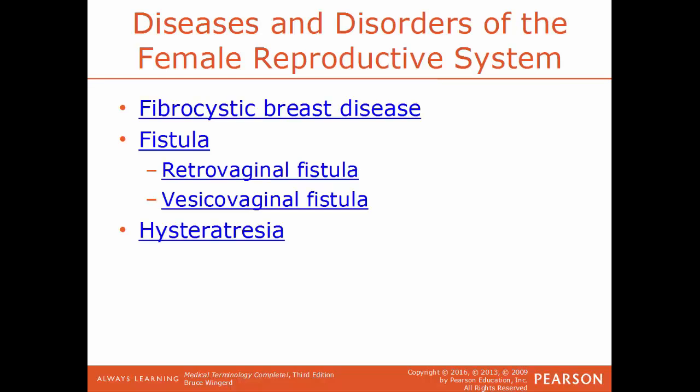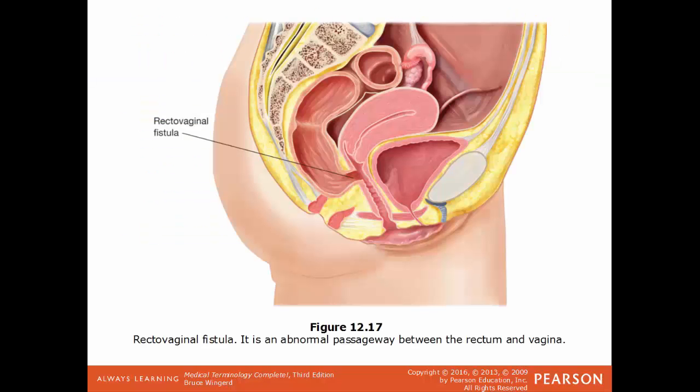A fistula is a permanent abnormal passageway between two organs or between an organ and the exterior of the body. A rectovaginal fistula is a connection between the rectum and the vagina. A vesicovaginal fistula is a connection between the vagina and the bladder. Hysteratresia is a condition where there is a closure of the uterus. In an illustration of a rectovaginal fistula, the rectum and vagina should not be connected — the abnormal passageway is the fistula.